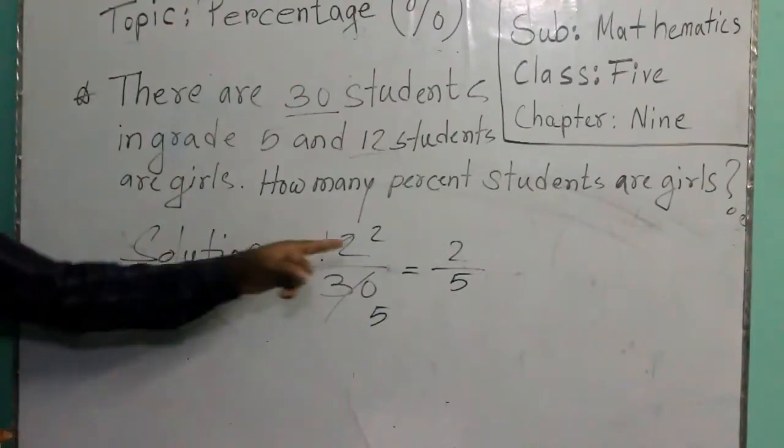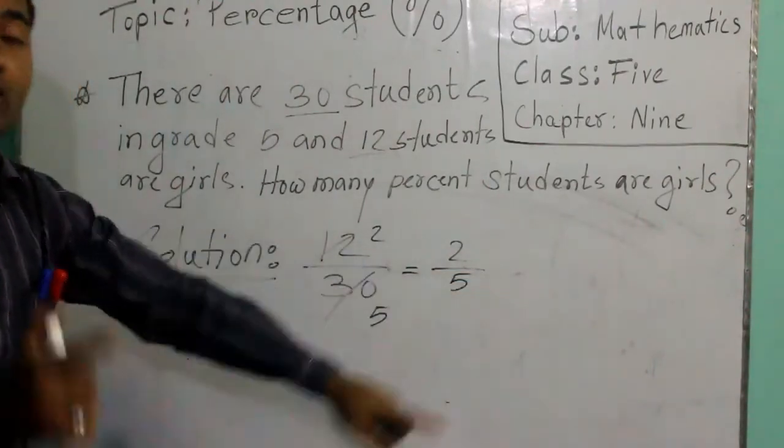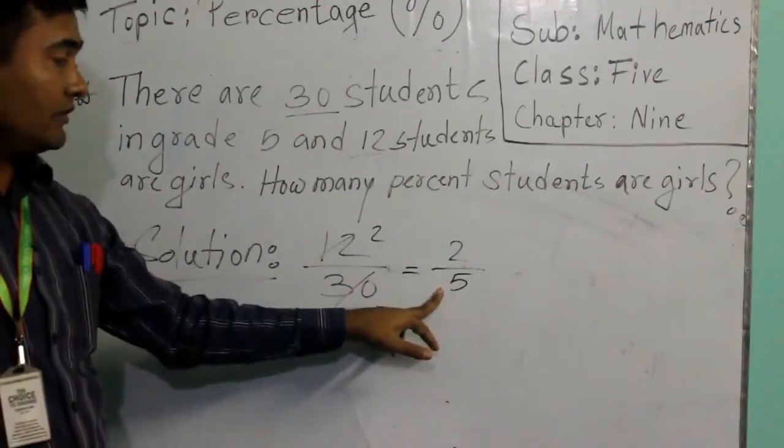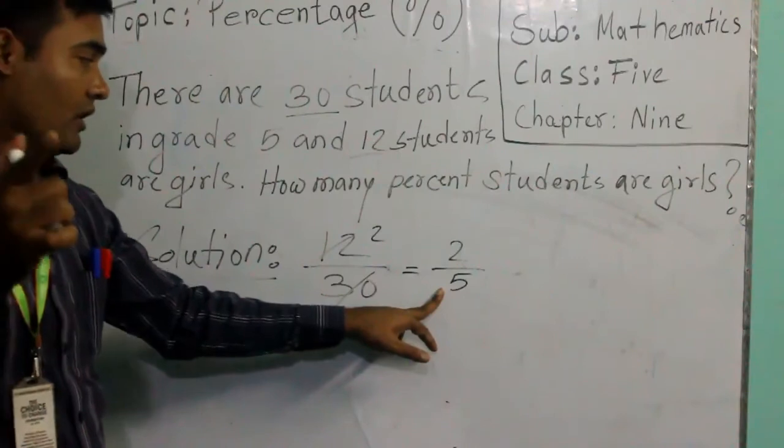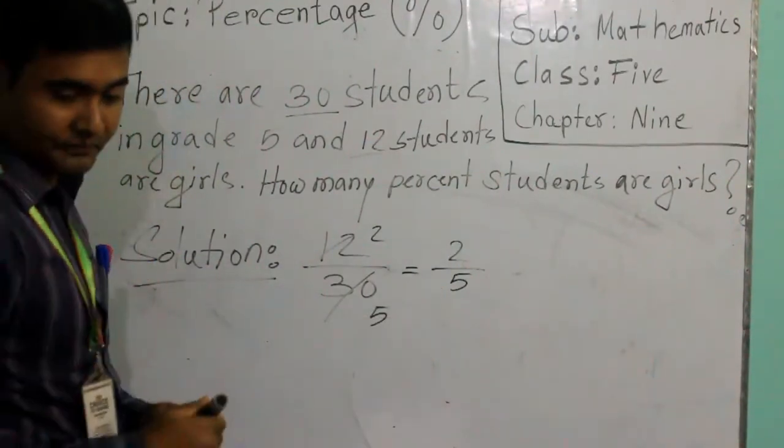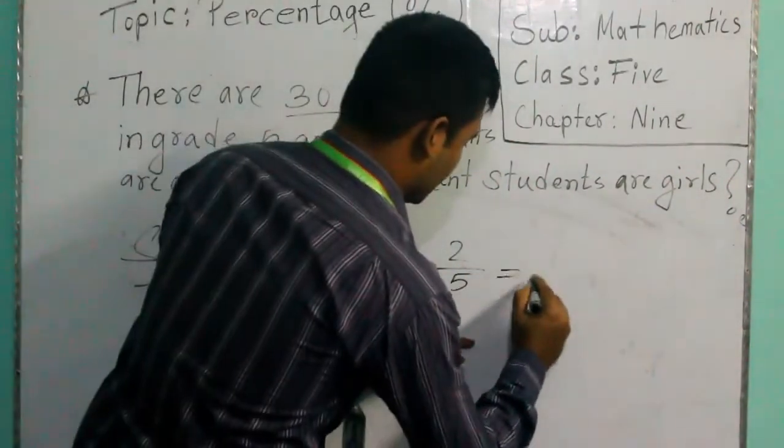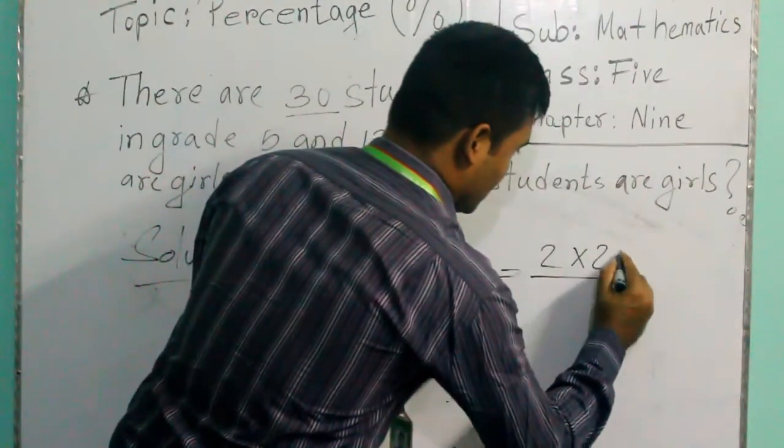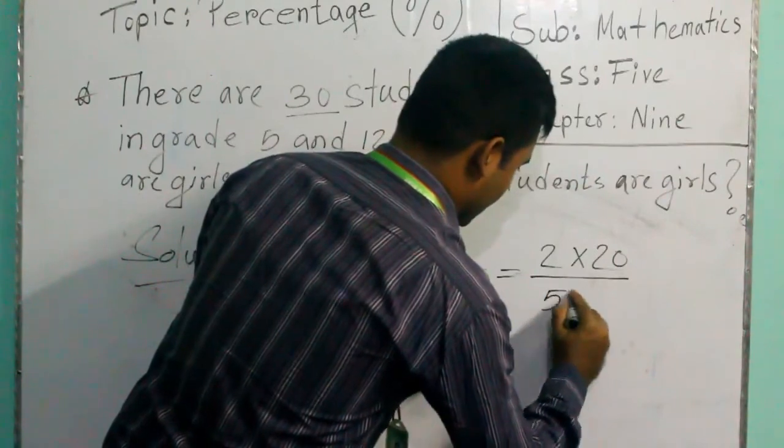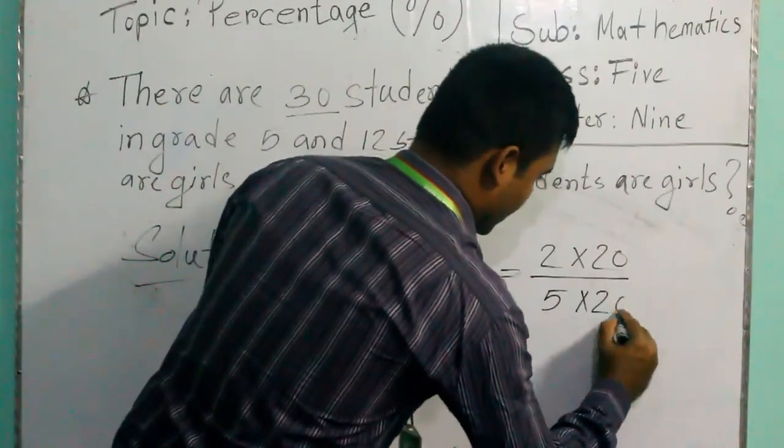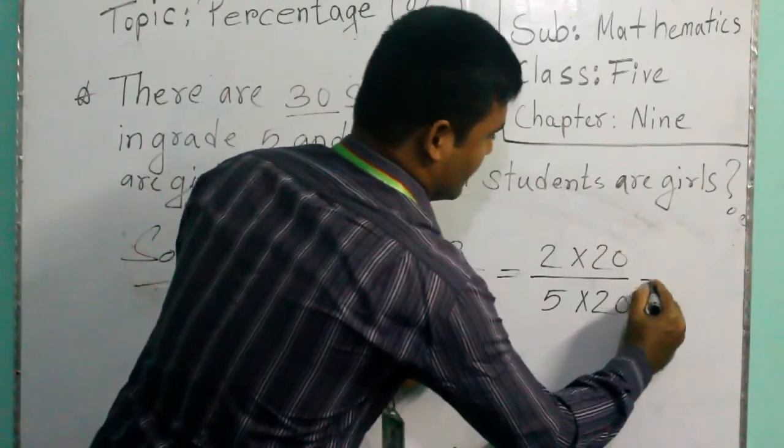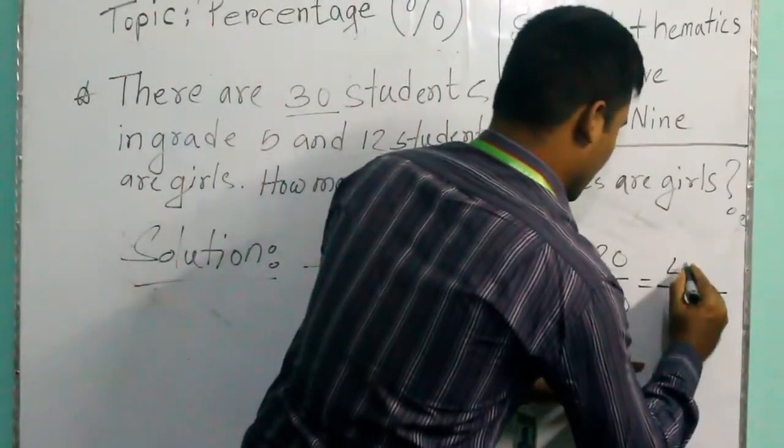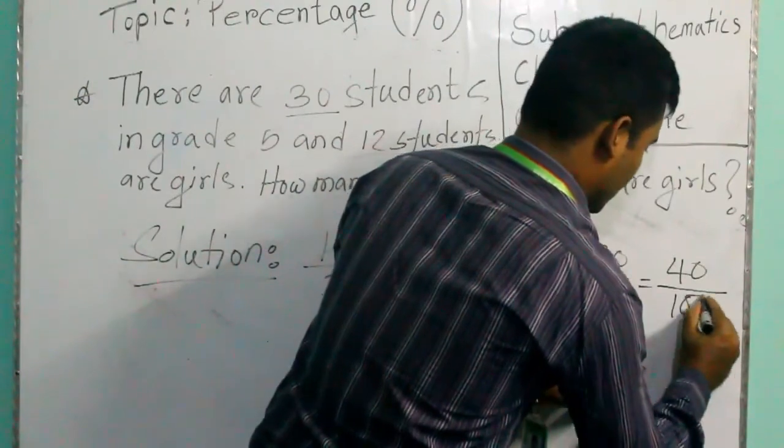Now we will convert, we can convert this one into 100. We need 100. Because if you want to do percentage math, we need to go for 100. Let us go. How much we need? 2 into 20, 5 into 20. This is very easy. Here we got 40 out of 100.